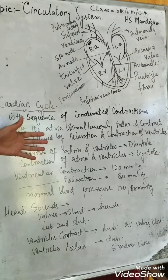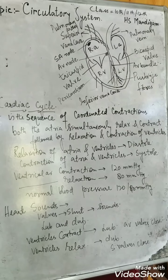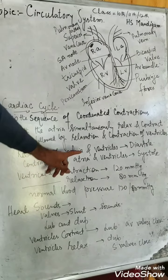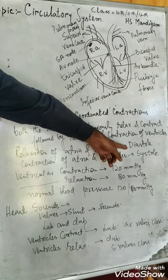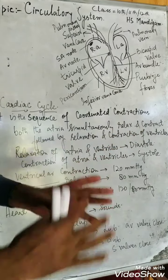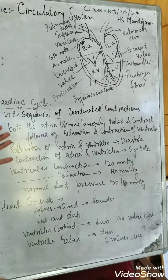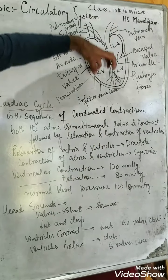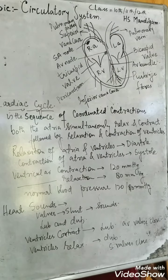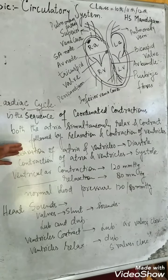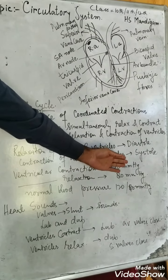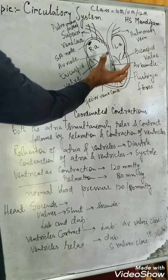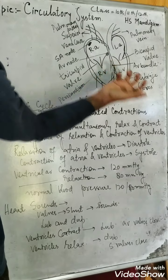One cardiac cycle lasts around 0.8 seconds. The relaxation of the atria and ventricles is called diastole — at that time the heart is filled with blood. When the contraction of the atria and ventricles takes place, that is called systole, and at the time of contraction the blood leaves the heart.